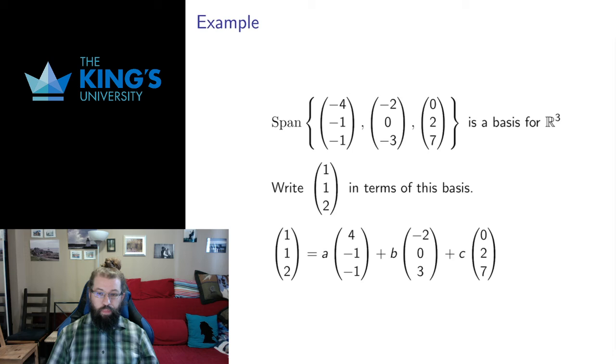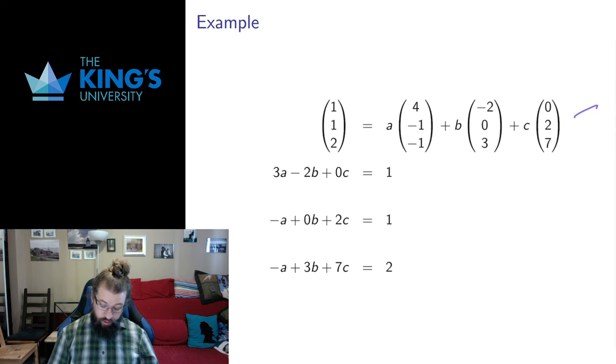Let me do one more example. Here's a particular basis for R³. These are three linearly independent vectors in R³. So any vector in R³ can be written in this basis. And maybe this basis is useful to us. Maybe it nicely describes the geometry we want to work with. So I want to find numbers a, b, and c such that this vector is some multiple of the first basis term plus some multiple of the second basis term plus some multiple of the third basis term.